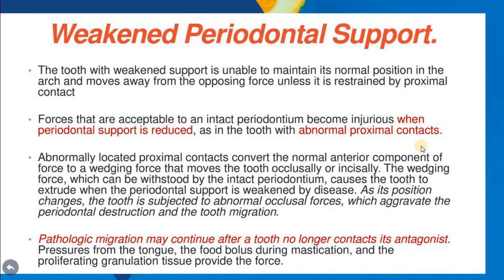An abnormally located proximal contact converts the normal anterior component of force into a wedging force that moves the tooth either occlusally or incisally. This wedging force can be tolerated by intact periodontium, but in the case of weakened periodontium, it causes the tooth to extrude. As its position changes, the tooth is subjected to abnormal occlusal forces, which aggravate the periodontal destruction and the tooth migration.